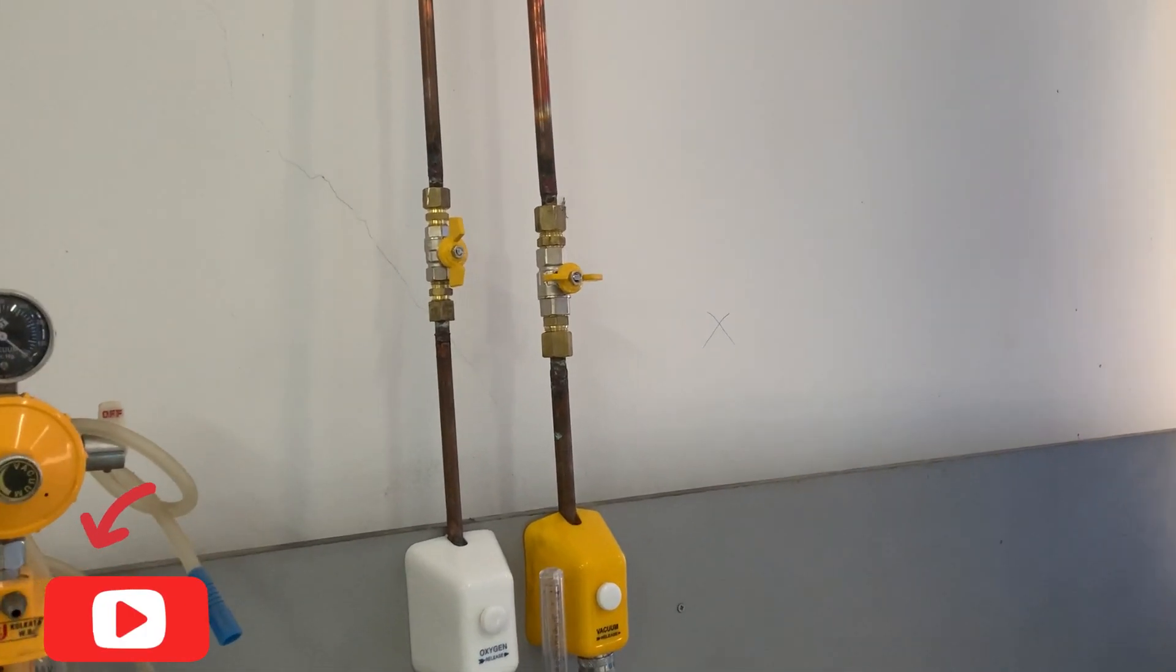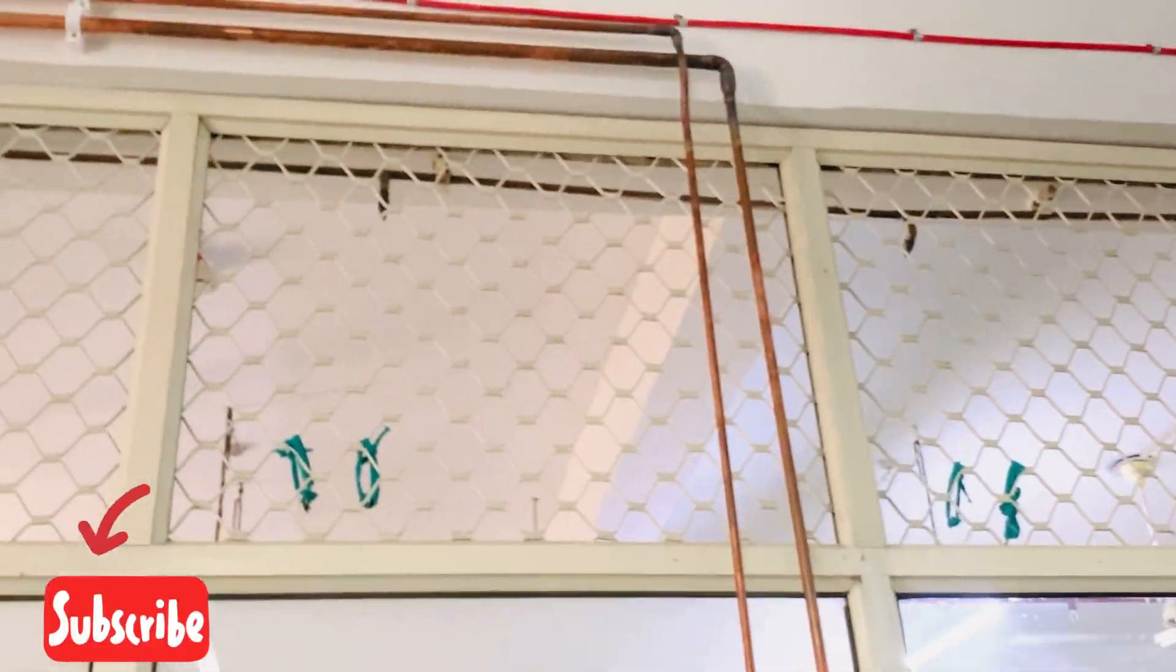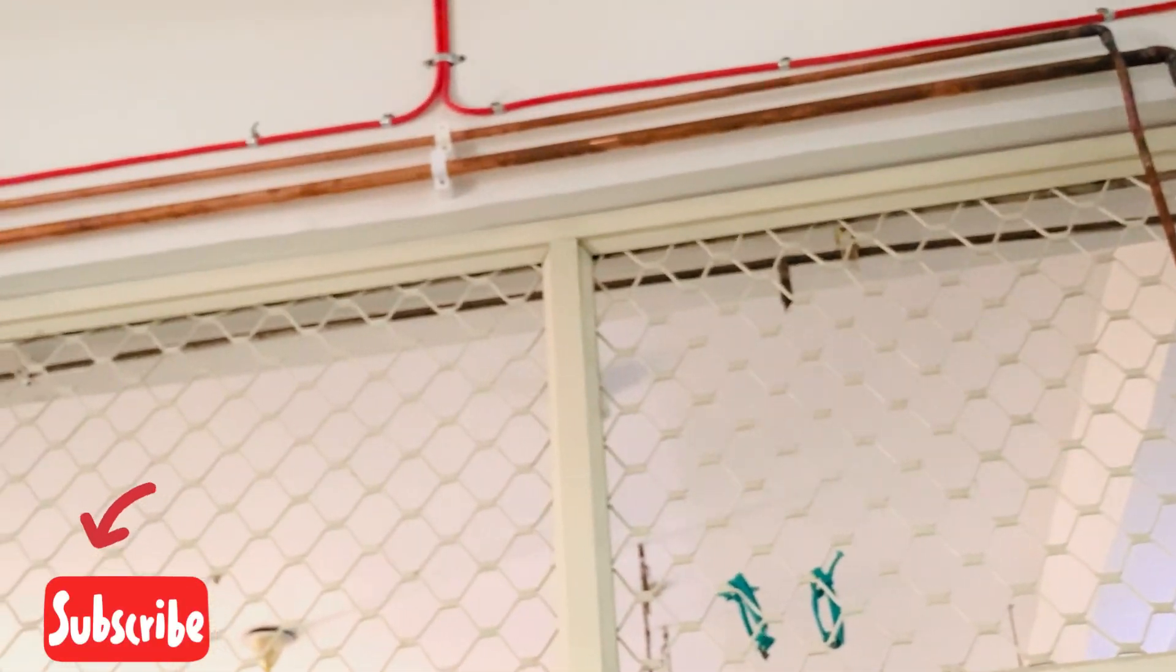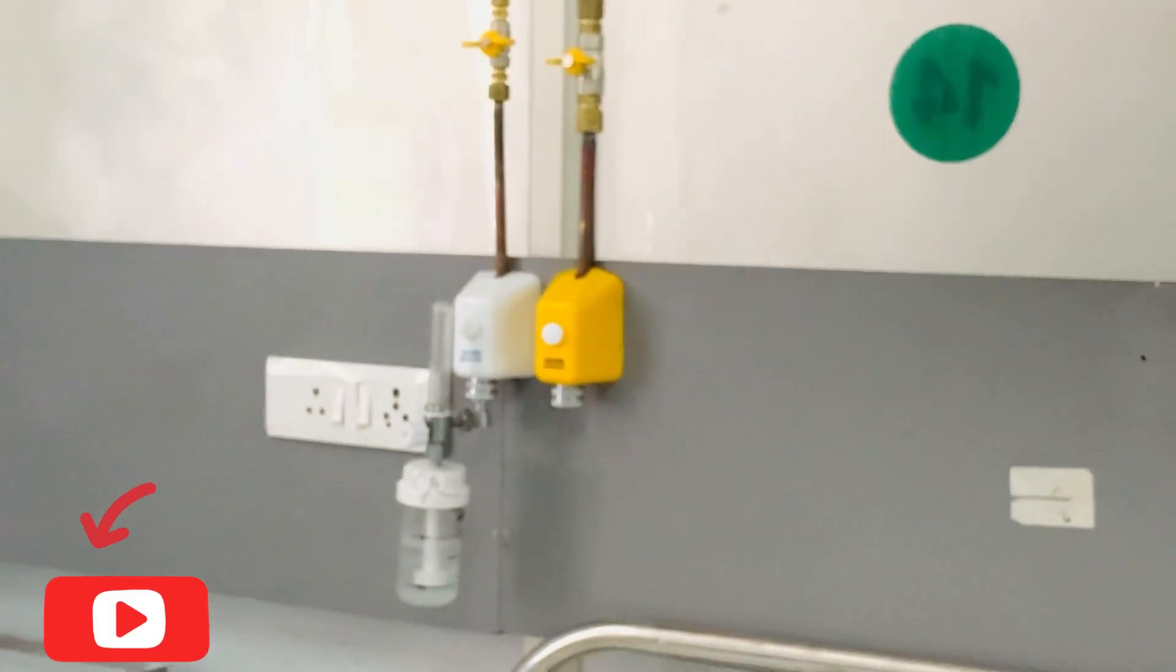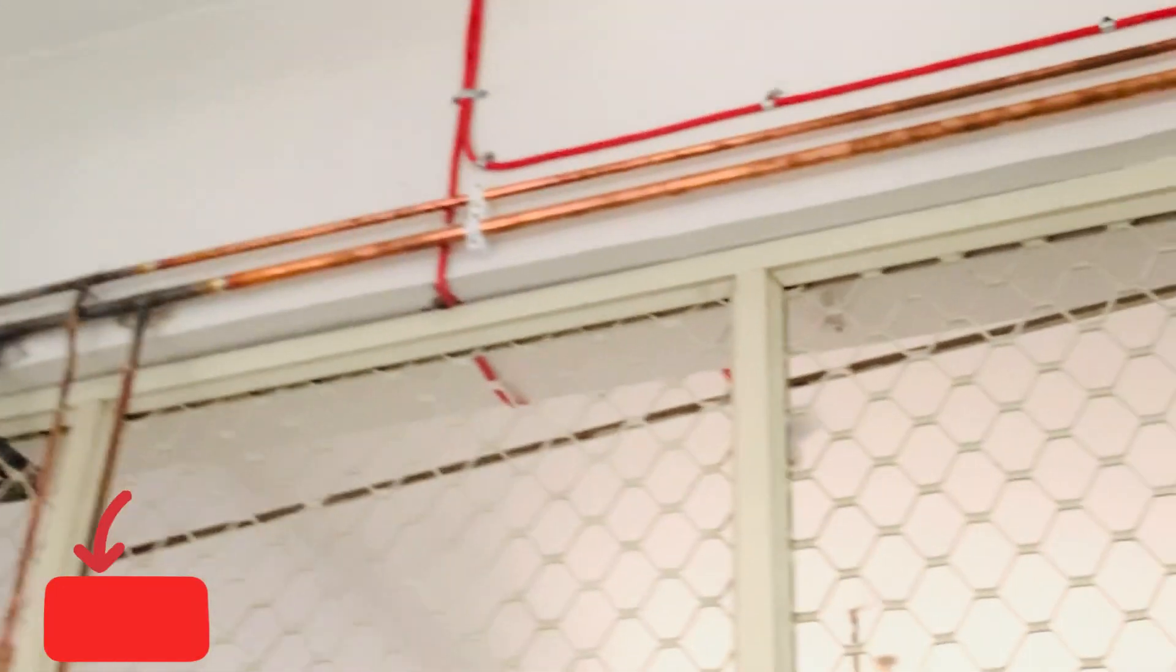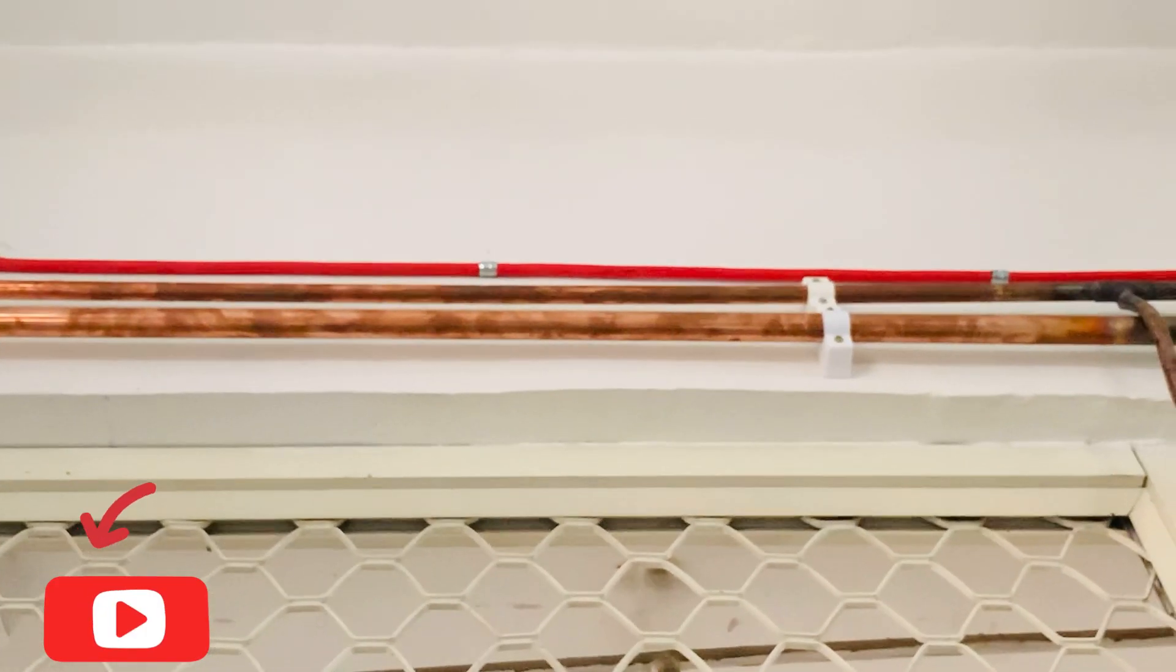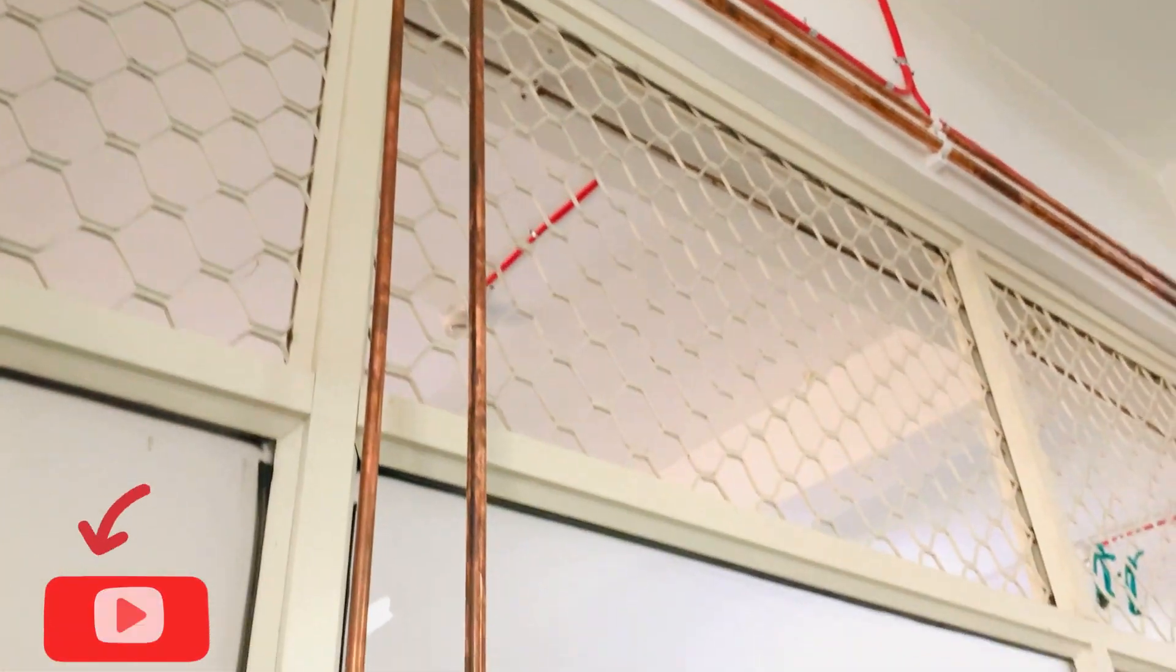If you go to a hospital you realize that all the medical gas pipelines are made up of copper. But have you ever wondered why we use copper in medical gas pipeline systems? As we all know, medical gas pipeline systems are required by all hospitals. It is mandatory in ICU, OT, emergency, and different sections of the hospital.